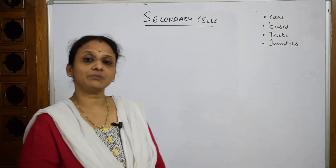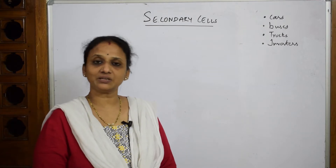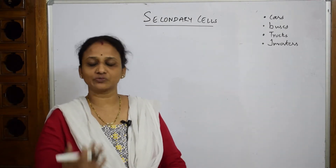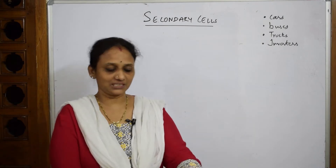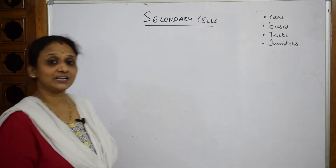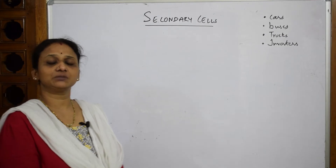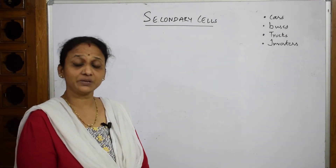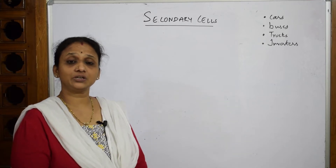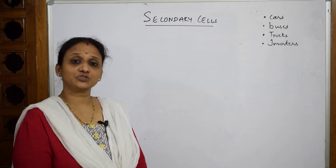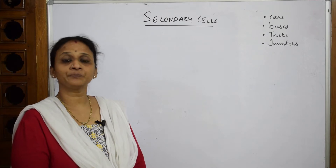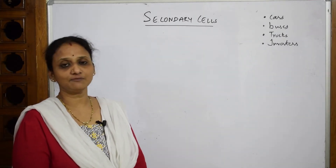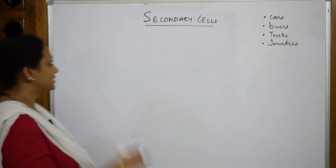Whenever secondary batteries are given to you, they may directly ask you to write the cell reaction, or ask about the roles of the plates or grids. Whenever writing about primary or secondary batteries, you need to cover: the cathode, the electrolyte, the anodic half-cell reaction, the cathodic half-cell reaction, the overall reaction, and the voltage.